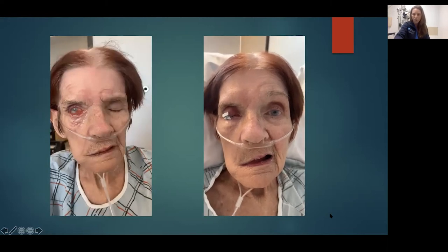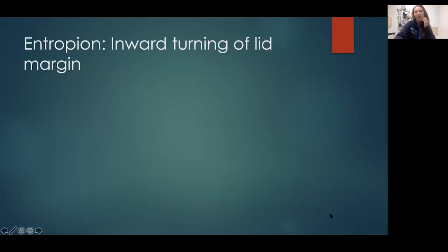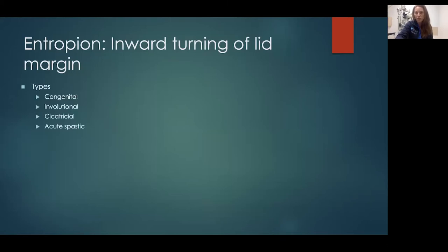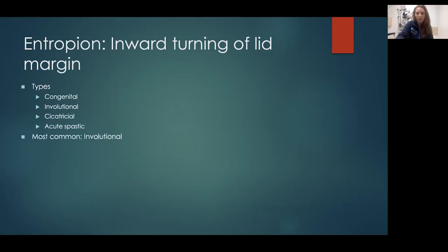So that's ectropion — where the eyelid turns outward. You can also have entropion, which is inward turning of the eyelid margin. There are a couple of different types as well: congenital; involutional with age; cicatricial — scarring after surgery that pulls the eyelid in from the inside; and spastic. The most common is involutional, which we see in our older patients.